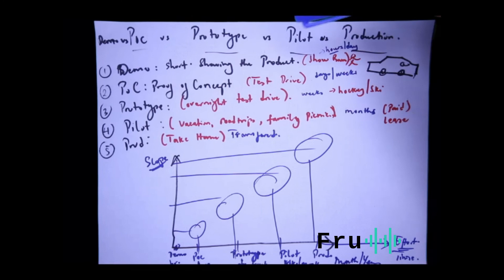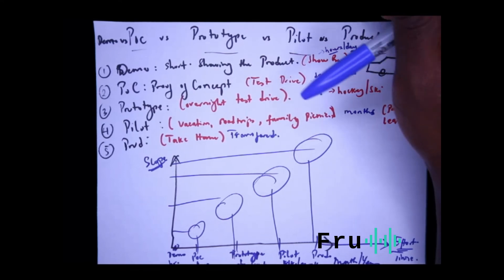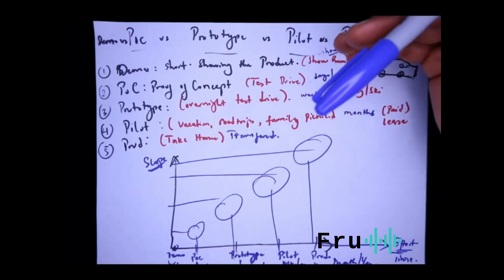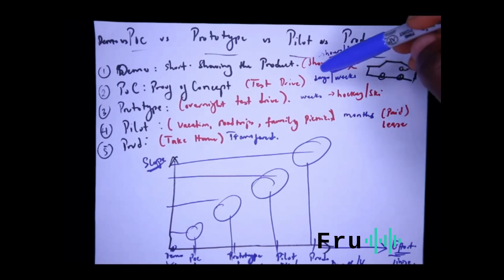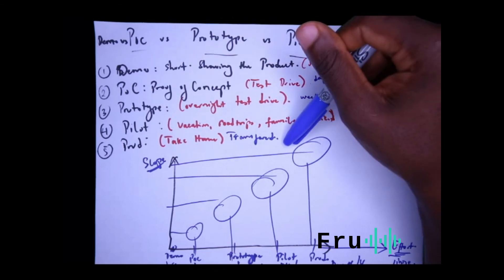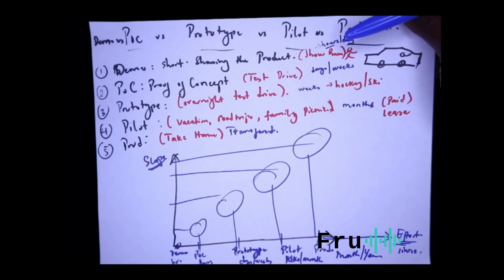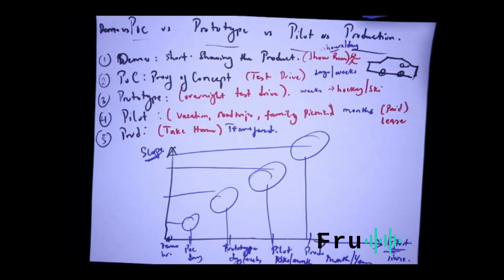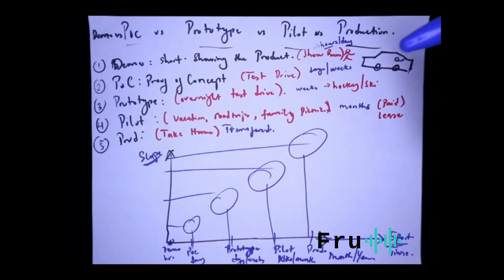So there you have it — POC versus pilot versus prototype versus production versus demo. MVP is a little bit of a different thing, but you can fit it somewhere in here. You're basically going through a series of steps to test a product before you make that investment. If you extrapolate the process of buying a car, those are the steps that people who buy or sell software go through to validate the product efficiently and effectively, and have some trust when they eventually make that decision. Hopefully this was helpful — if you have any questions, leave them in the comment section below. Thanks for watching. I'll see you in the next presentation.